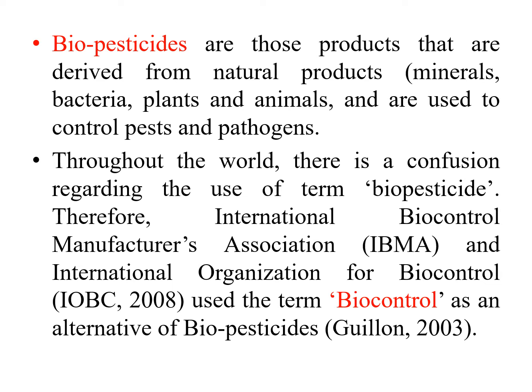When we discuss biopesticides, the word contains two parts: 'bio' meaning biological or living substances, and 'pesticides' meaning chemicals that kill pests or rodents. So biopesticides are products derived from natural products like minerals, bacteria, plants and animals, and are used to control pests and pathogens. Throughout the world, there is some confusion about the term; the International Organization for Biopesticides uses 'biopesticides' as an alternative term for biopesticides.